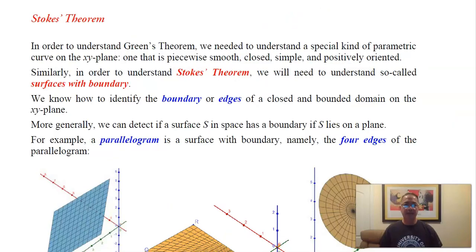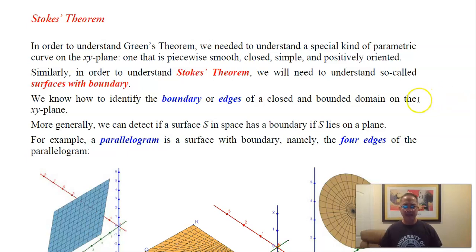This is called Stokes' theorem. In order to understand what it says, we first have to understand the kind of surface it involves — and that is a surface with boundary. So what does that mean?